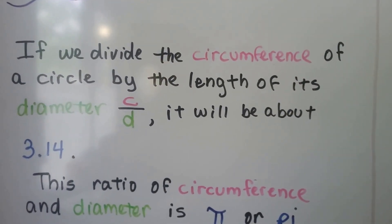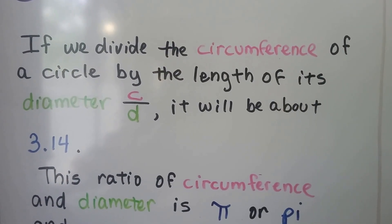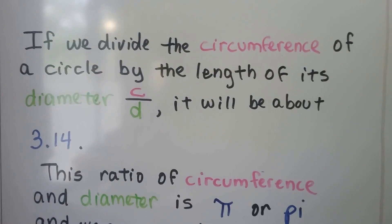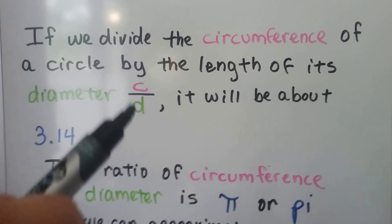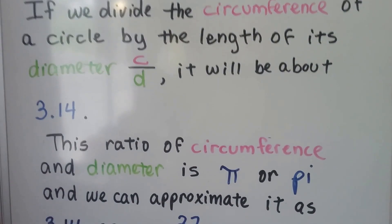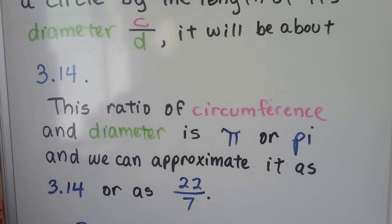If we divide the circumference of a circle by the length of its diameter, c over d, it'll be about 3.14. So remember that fractions are little division problems. They're also ratios. And this ratio of circumference and diameter is pi.